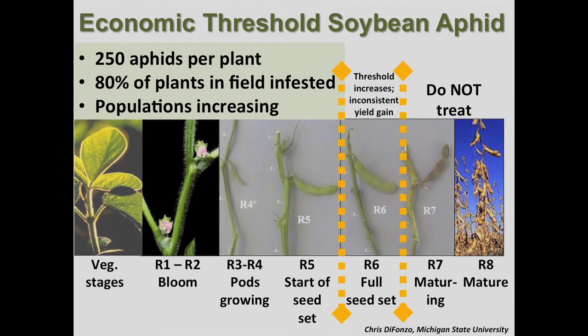Aphids can occur in hot spots, but treatment decisions should be based on a broad sample of randomly selected plants. Use the action threshold of 250 aphids per plant, 80 percent of the plants in the field infested, and when populations are actively increasing. This has a built-in window to arrange for a foliar insecticide treatment.